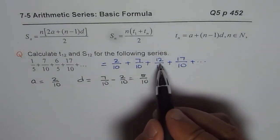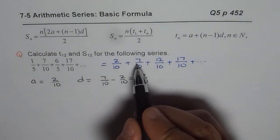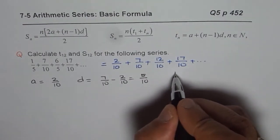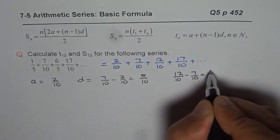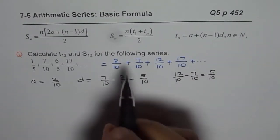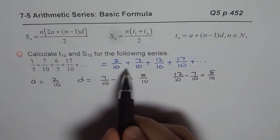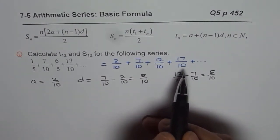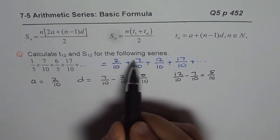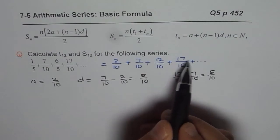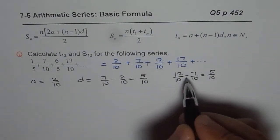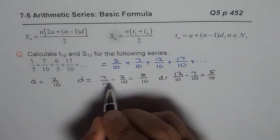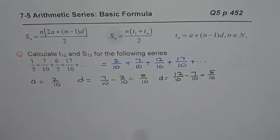If I do the difference between third and the second term, let me check that part also. 12 over 10 minus 7 over 10 I do get 5 over 10 only. You can compare the numerators when the denominators are the same, it becomes simpler. So in the numerator if you add 5 you get the next term. So 5 over 10 is the common difference.